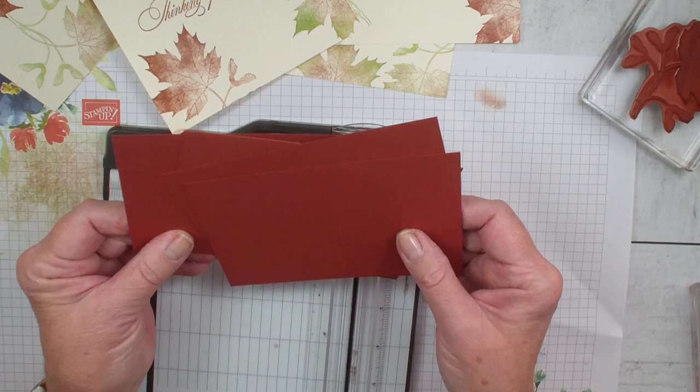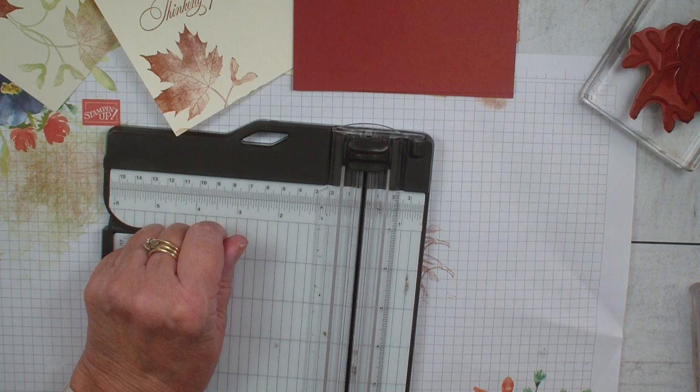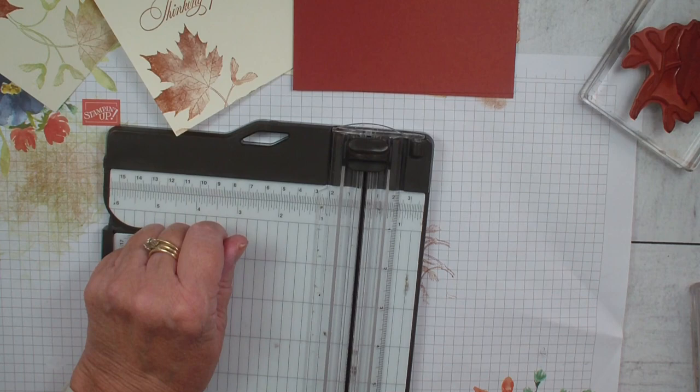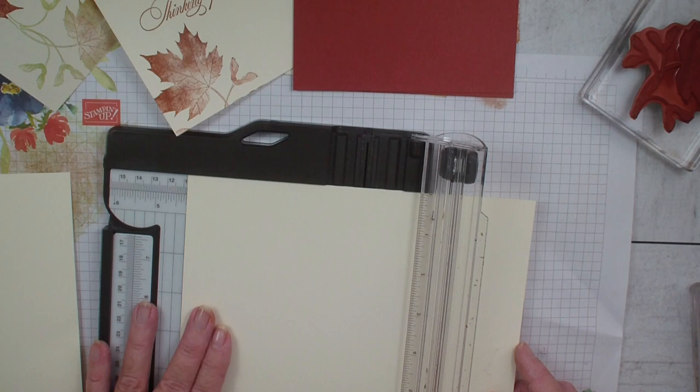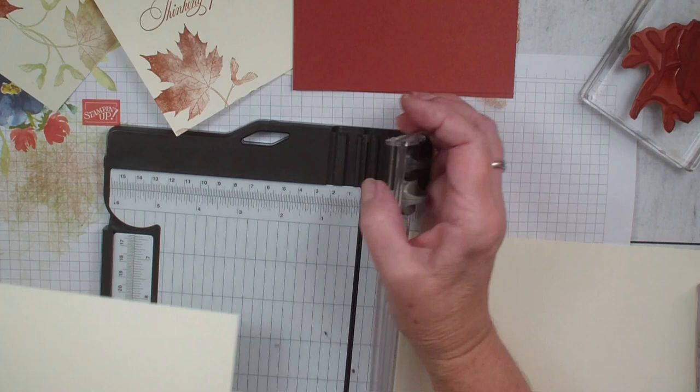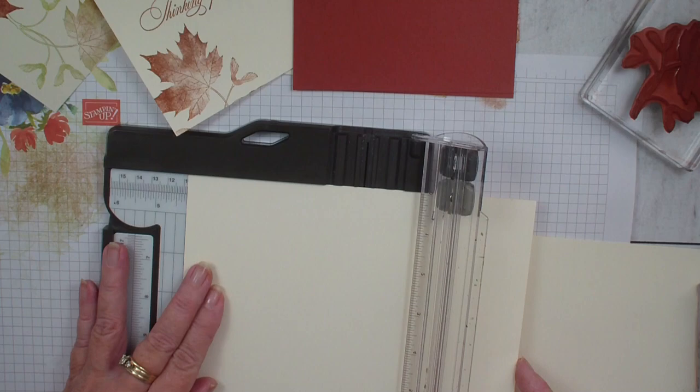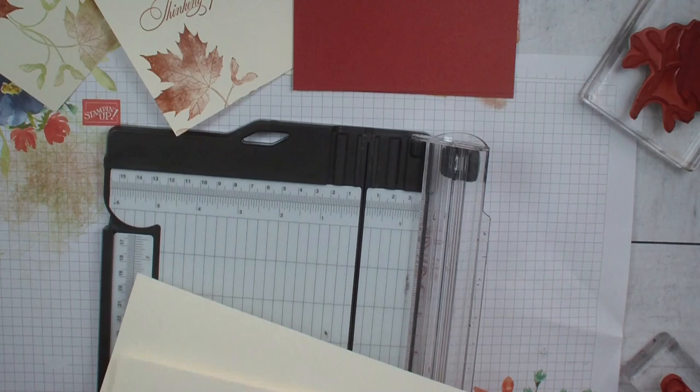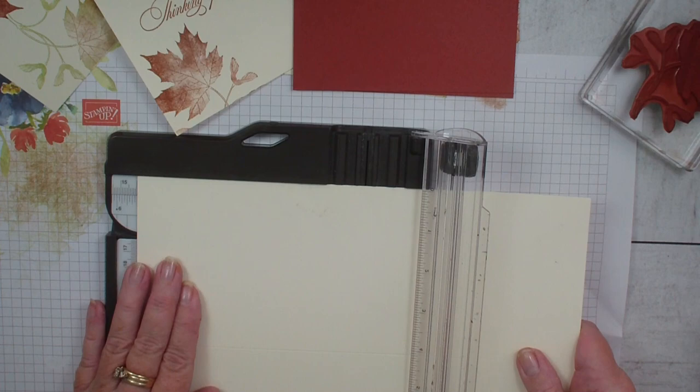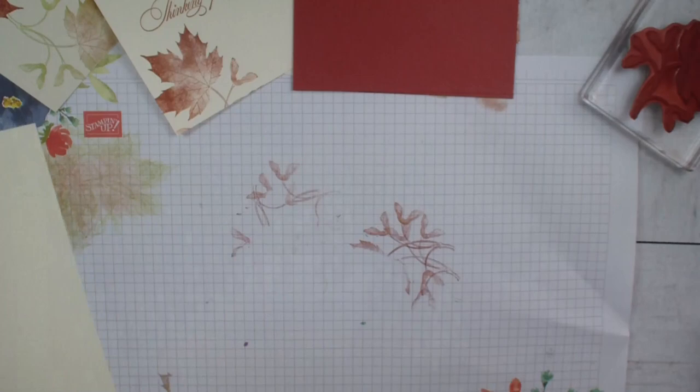So I've already cut four pieces of the Cajun Craze. These measure four and an eighth by five and three eighths. I'm going to bring in two pieces of eight and a half by eleven cardstock and I am going to score them at four and a quarter inch and then cut them at the five and a half. So it gives me four A2 card bases. I put that back in like so and now I'm ready to assemble my cards.